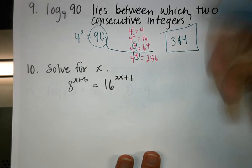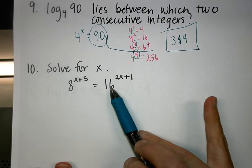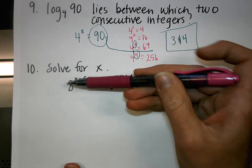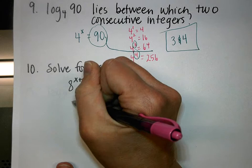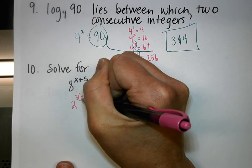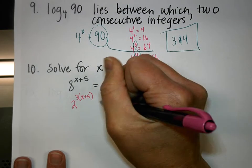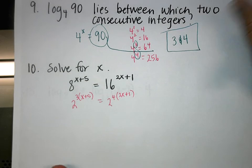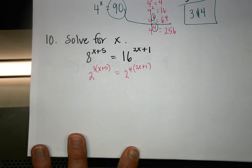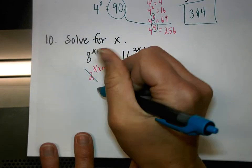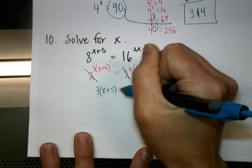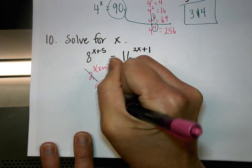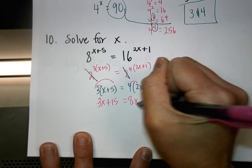Number 10: To solve for X you need like bases. 16 can't be changed to base 8, and 4 won't work either, so you go to base 2. 8 is 2 to the third power, so multiplying powers gives 2 to the 3(x+5). 16 is 2 to the fourth power times 2x+1. With like bases, eliminate them and solve: 3(x+5) equals 4(2x+1). Distribute to get 3x + 15 equals 8x + 4.